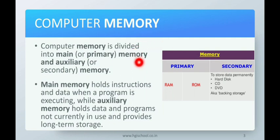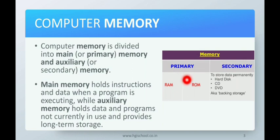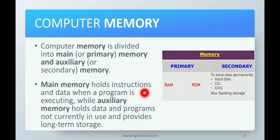Computer memory is divided into two types: main memory and auxiliary memory. Main memory is also known as primary memory, and secondary memory is also known as auxiliary memory. Primary memory is of two types: RAM and ROM. Secondary memory contains hard disk, CD, DVD, etc., which store data permanently. Main memory holds instructions and data when a program is executing, while auxiliary memory holds data and programs not currently in use and provides long-term storage.